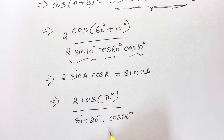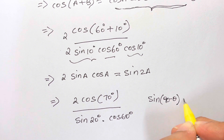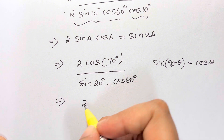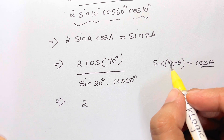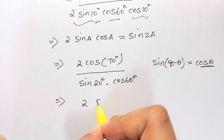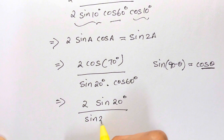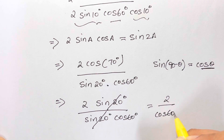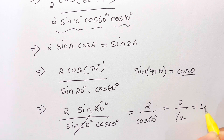Now, sin(90° − θ) = cos θ, so cos(70°) = sin(90° − 70°) = sin(20°). This gives us 2·sin(20°) over sin(20°)·cos(60°). The sin(20°) cancels, leaving 2 over cos(60°). Since cos(60°) = 1/2, we get 2 ÷ (1/2) = 4. And that's your answer!